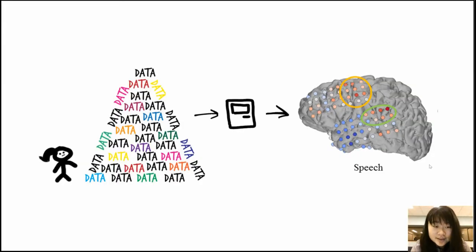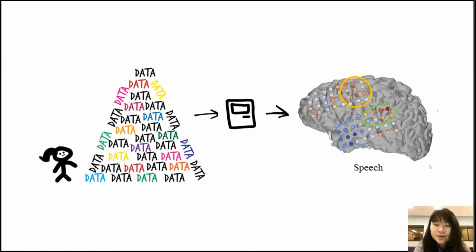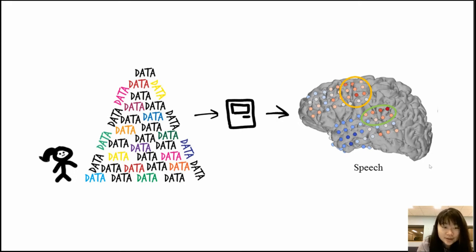So we have all this data — audio, video, and even neurodata. The question is, how can we turn all these hours and hours of data into something meaningful? For example, what are the areas of speech in this person's brain? That's the question we want to tackle with automation, machine learning, and data science.